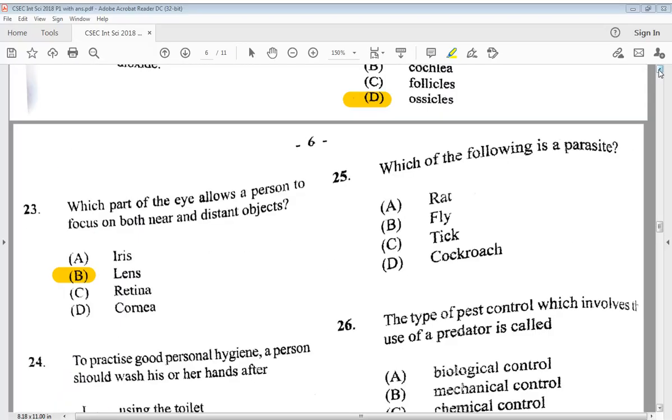This is an easy one. Let's go to 25. Which of the following is a parasite? A, rat. B, fly. C, tick. D, cockroach. We know it is C, tick.